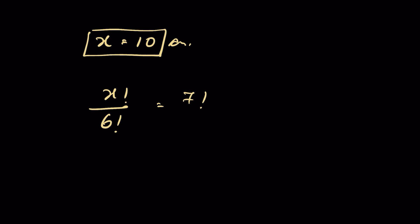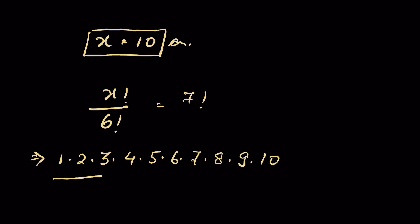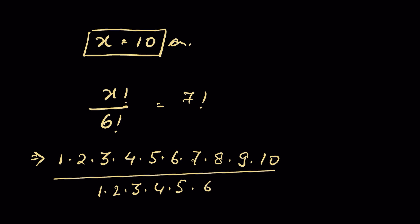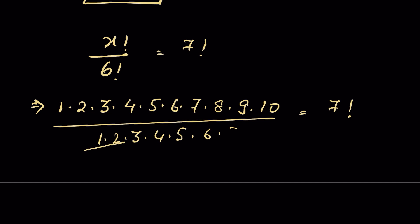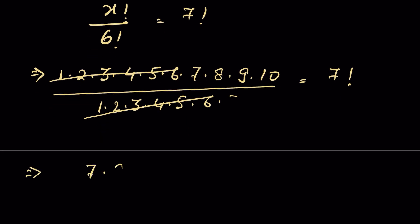10 factorial is 1 times 2 times 3 times 4 times 5 times 6 times 7 times 8 times 9 times 10, divided by 6 factorial which is 1 times 2 times 3 times 4 times 5 times 6, and this should equal 7 factorial. We can cancel the like factors, so everything up to 6 cancels, leaving us with 7 times 8 times 9 times 10 equals 7 factorial.